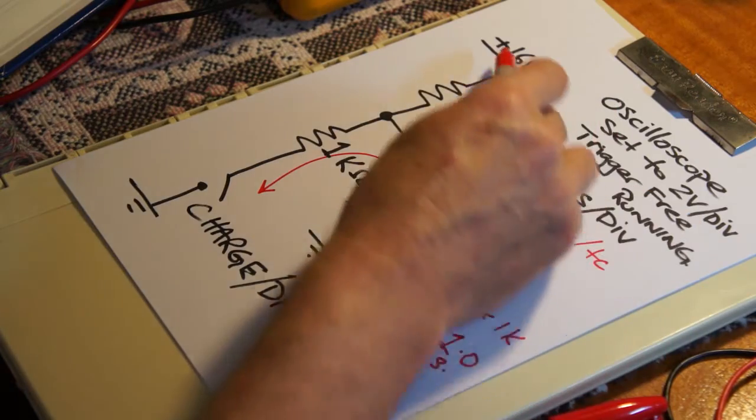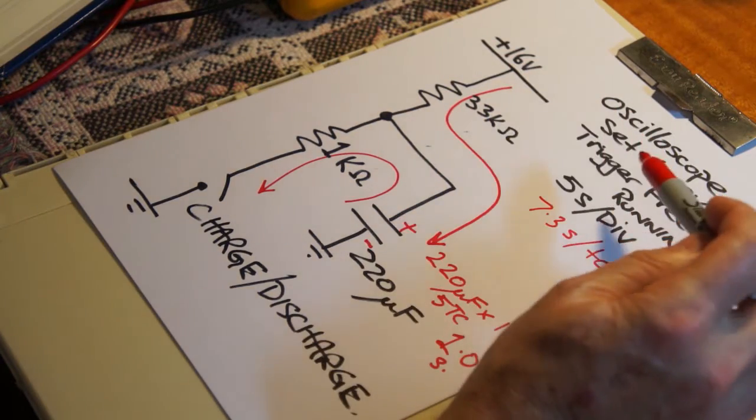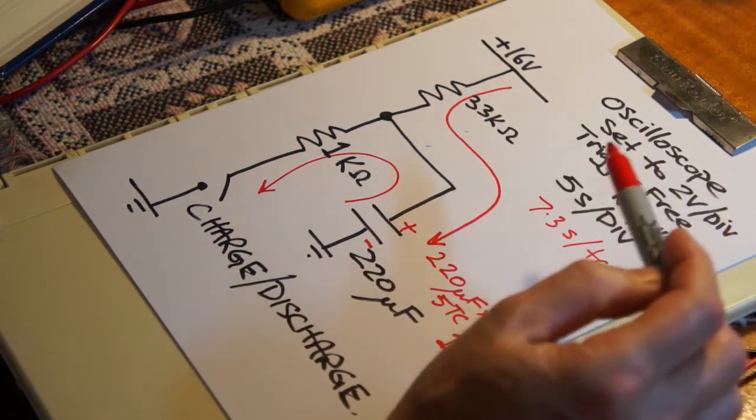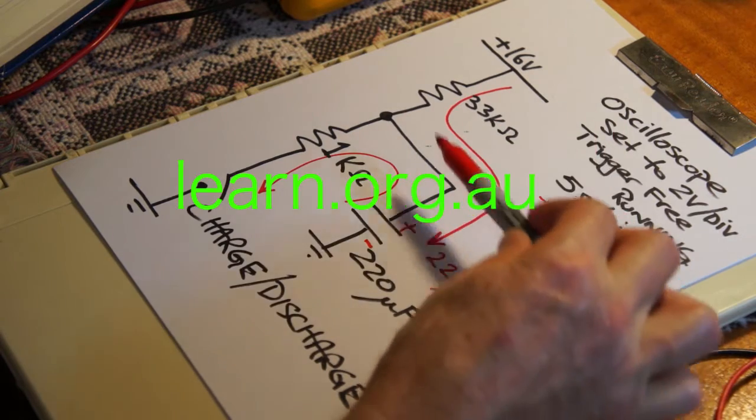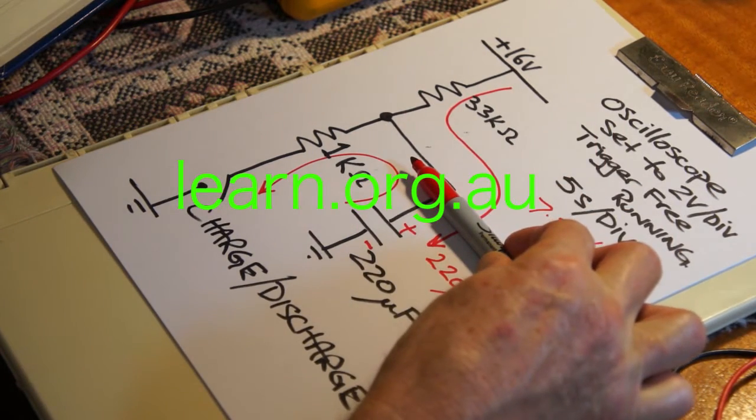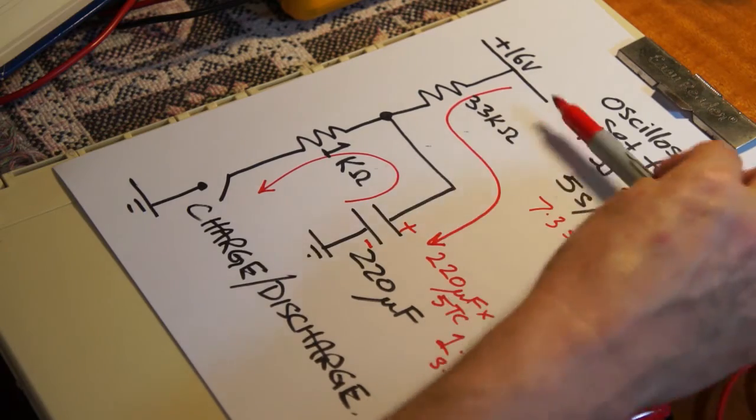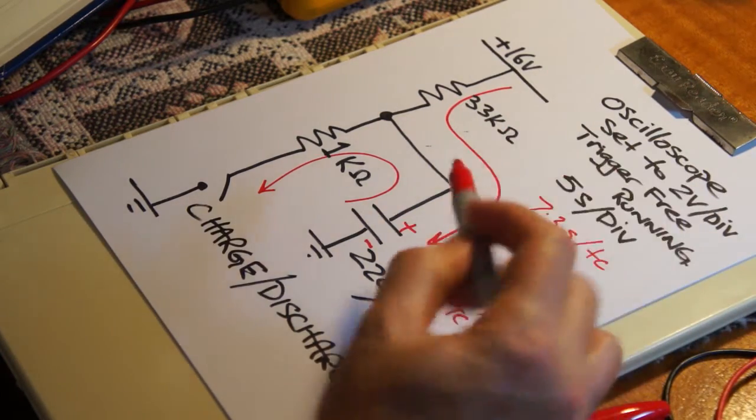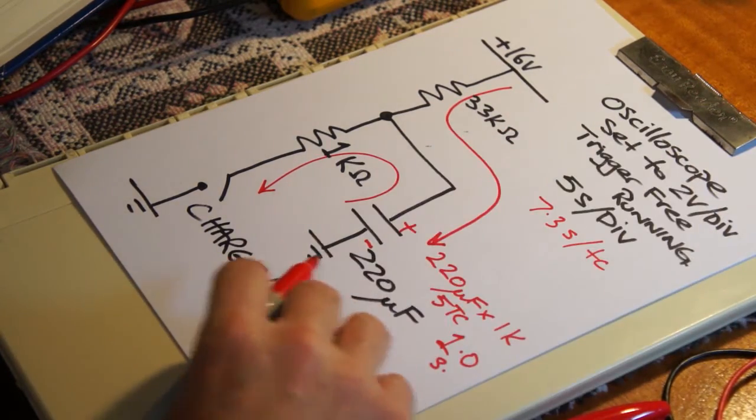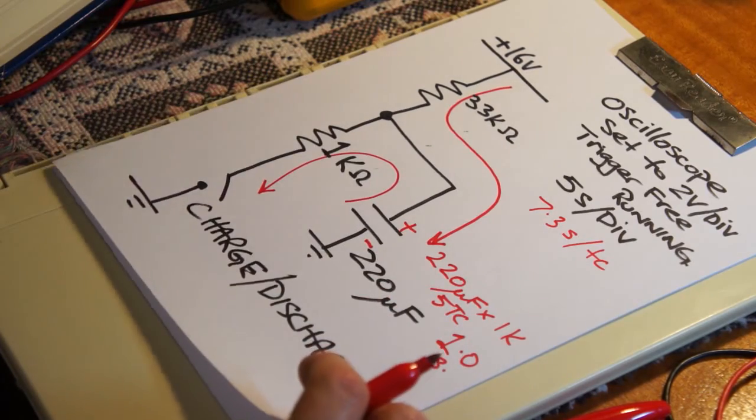I've used 16 volts for the rail because there's eight divisions vertically on the oscilloscope. So from the zero reference mark at the bottom of the screen using DC coupling to the very top is that 16 volts and we expect to get the full ramp on that.